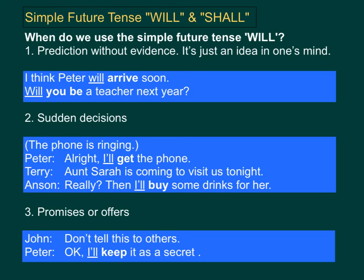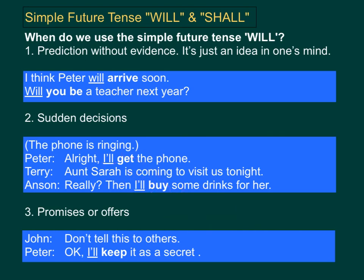Number two: sudden decisions. For example, alright, I'll get the phone. Aunt Sarah is coming to visit us tonight. Really? Then I'll buy some drinks for her. Remember, I'll is the short form of I will. Number three: promises or offers. For example, don't tell this to others. Okay, I'll keep it as a secret.